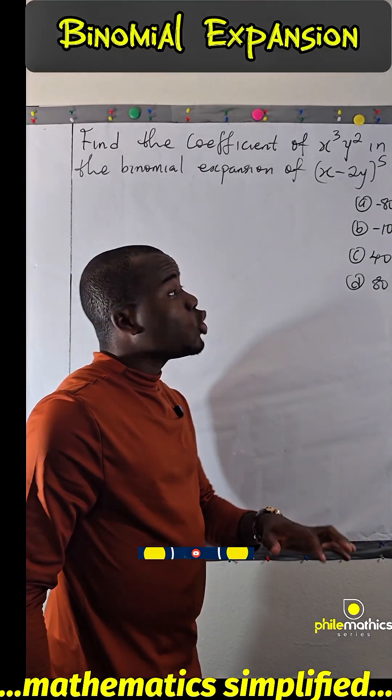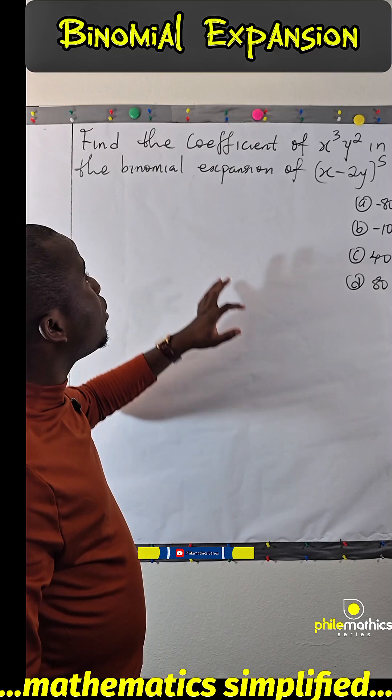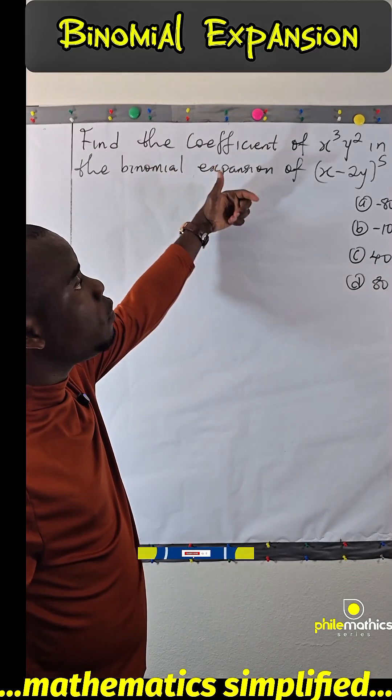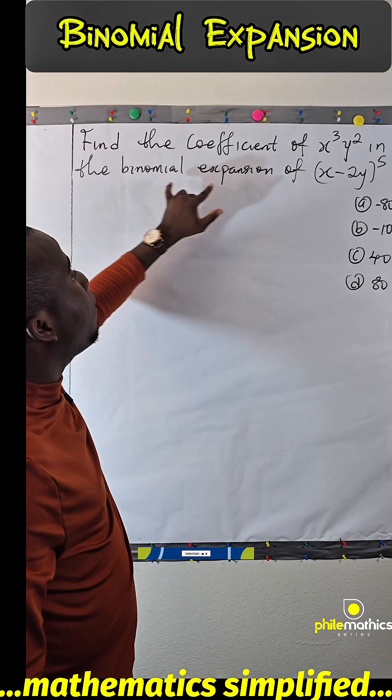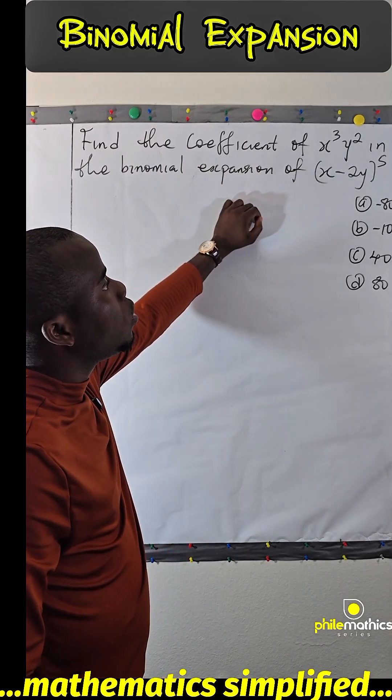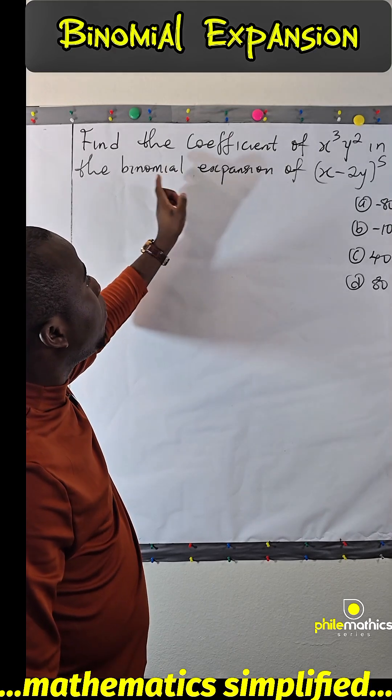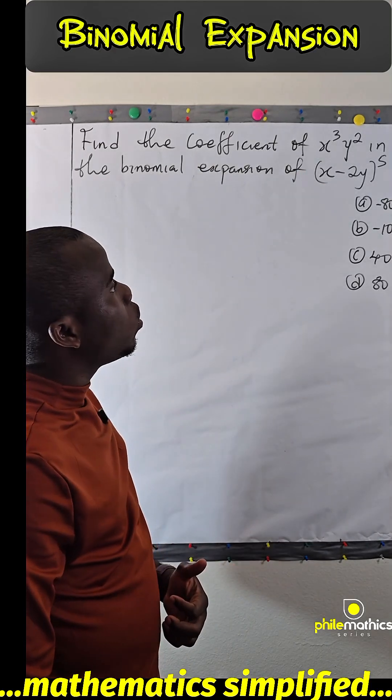This is a question on binomial expansion and we are asked to find the coefficient of x³y² in the binomial expansion of (x - 2y)⁵.